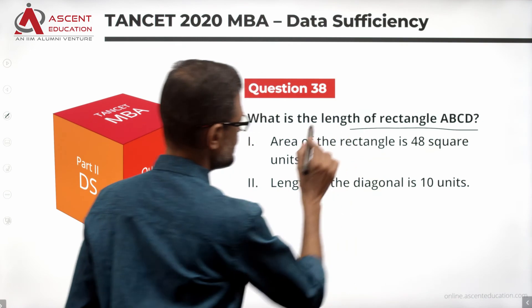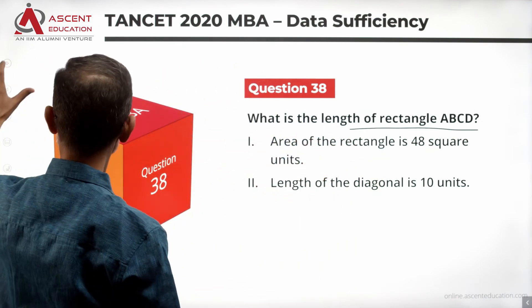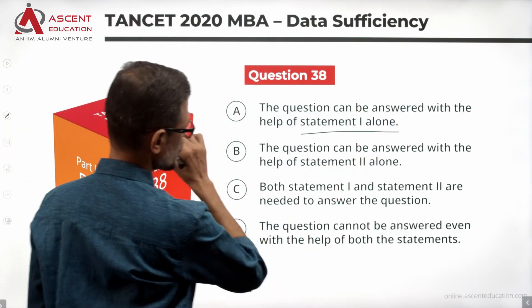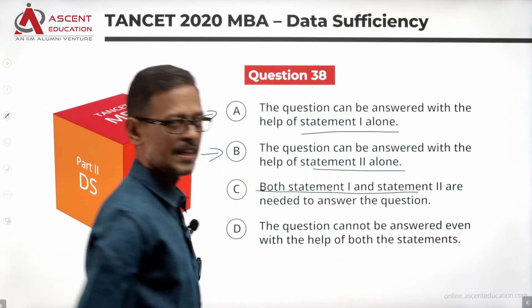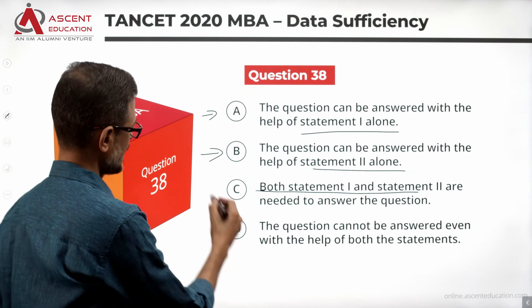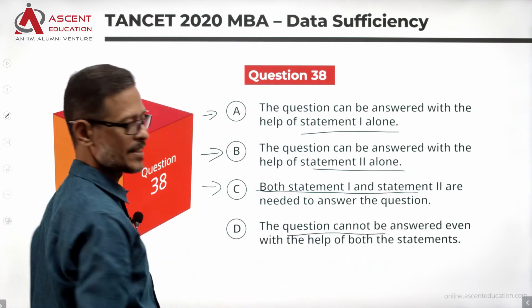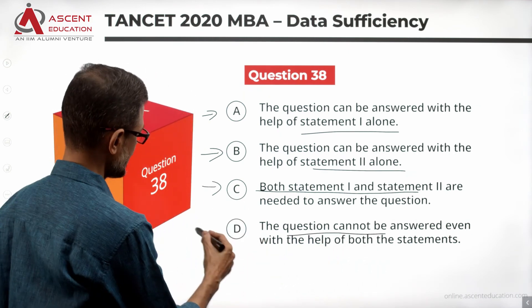What is the length of rectangle ABCD? Look at the statements in a while. Four answer options: Statement 1 alone is sufficient - answer option is A. Statement 2 alone is sufficient - answer option is B. Together 1 and 2, then the answer option is C. The question cannot be answered with the help of the statements - then essentially the answer option is D.